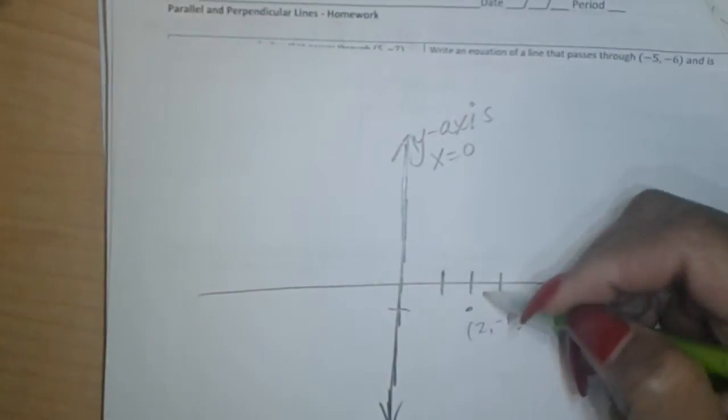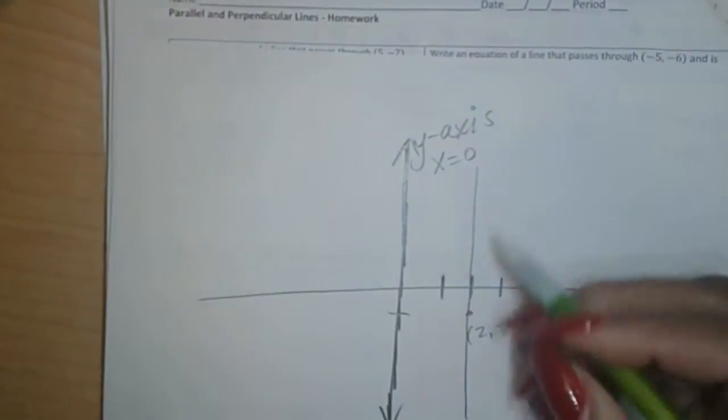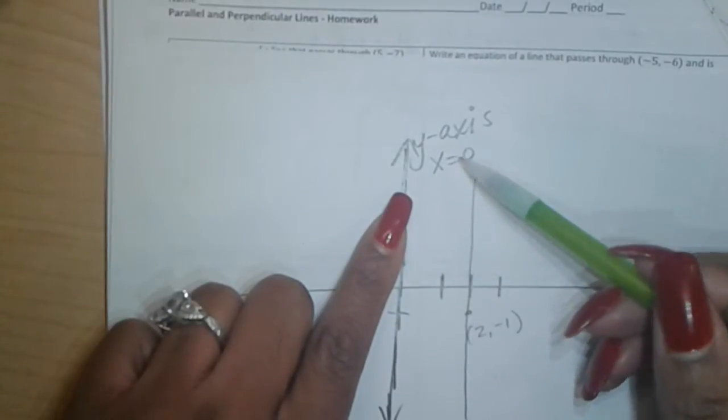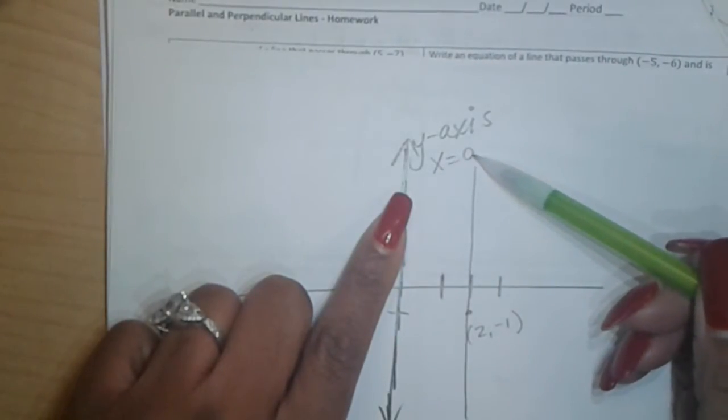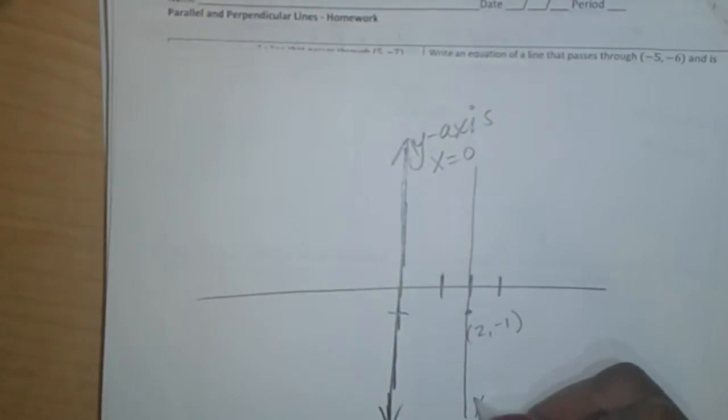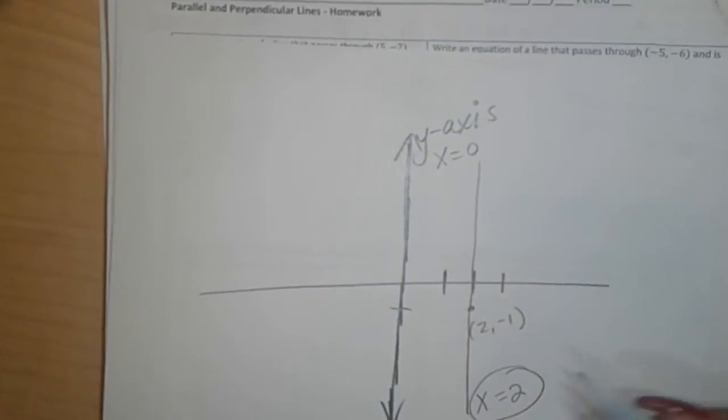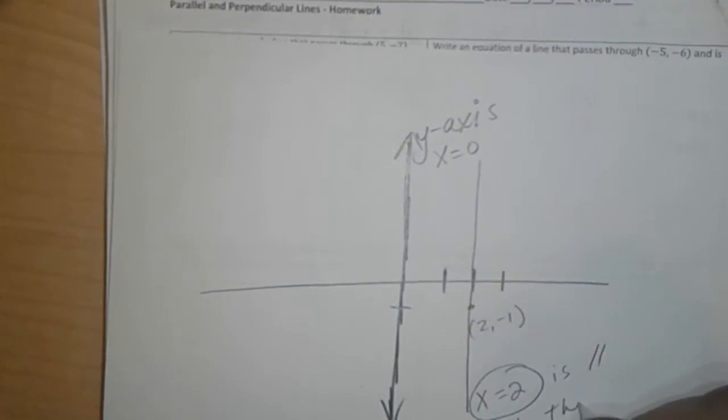So parallel to the x-axis, I'm sorry, to the y-axis. Parallel to the y-axis, x equals zero, would be what? x equals 2. So x equals 2 is parallel to the y-axis, which is x equals zero.